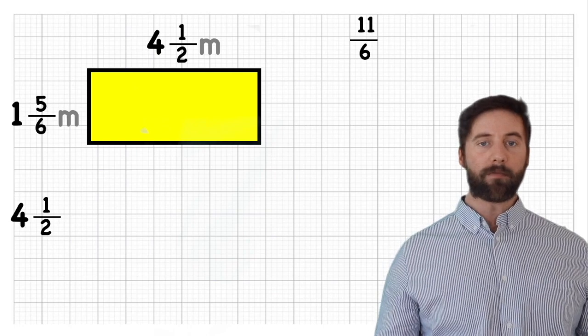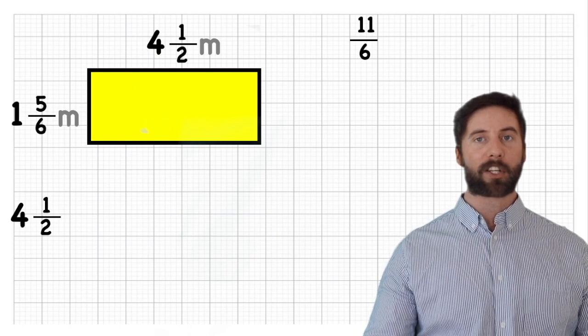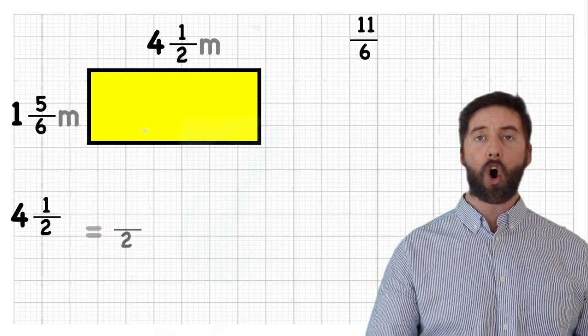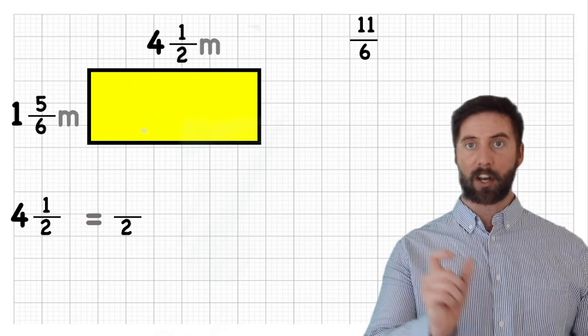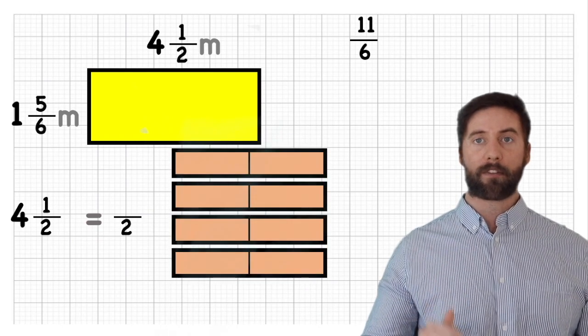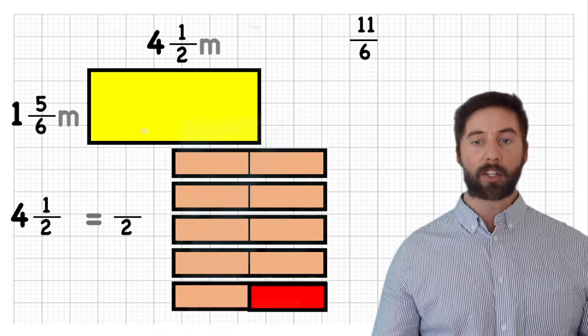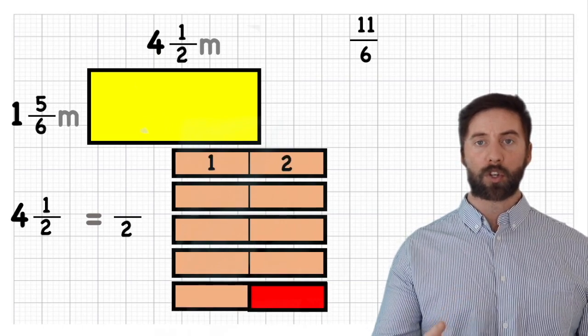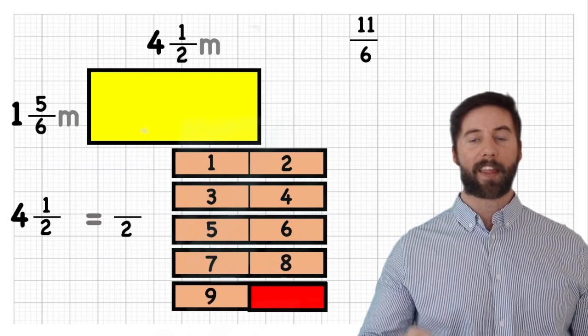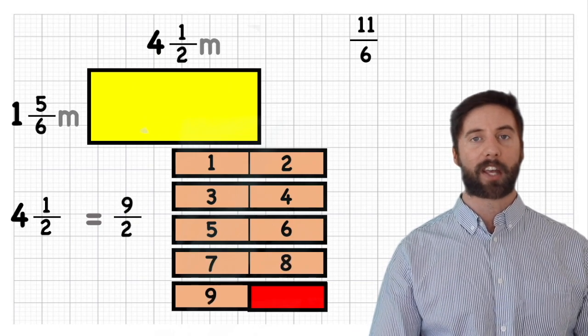So for my next one, four and one half. Again, everything is measured in halves. So I've got four whole chocolate bars which were measured in half. So I've got one, two, three, four whole chocolate bars, and I've got half a chocolate bar. So in total how many halves have I got? One, two, three, four, five, six, seven, eight, and then the ninth, nine halves.